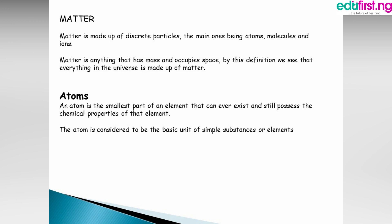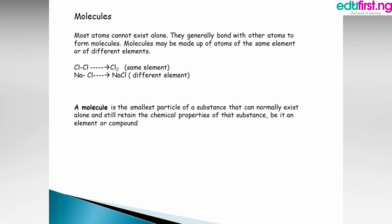Even we as humans are matter. Moving on to atoms: an atom is the smallest part of an element that can exist and still possess the chemical properties of that element. The atom is considered to be the basic unit of simple substances or elements.